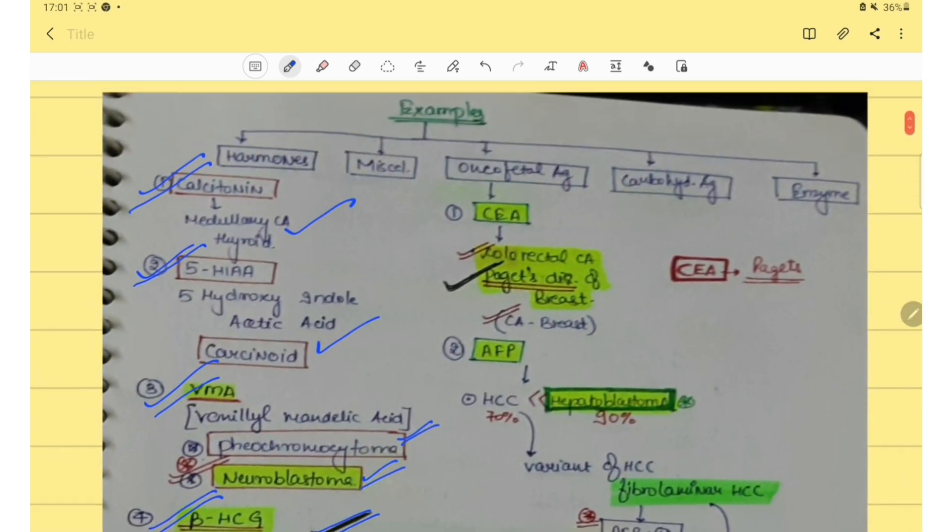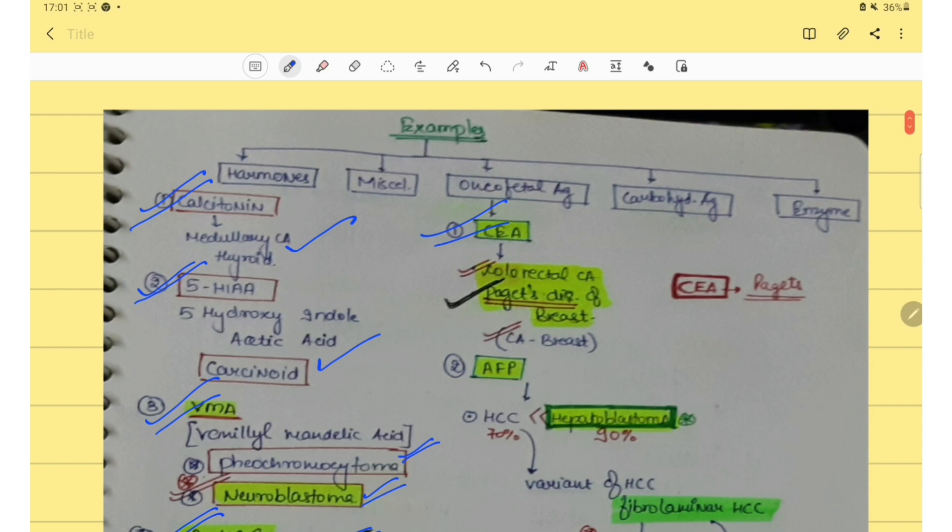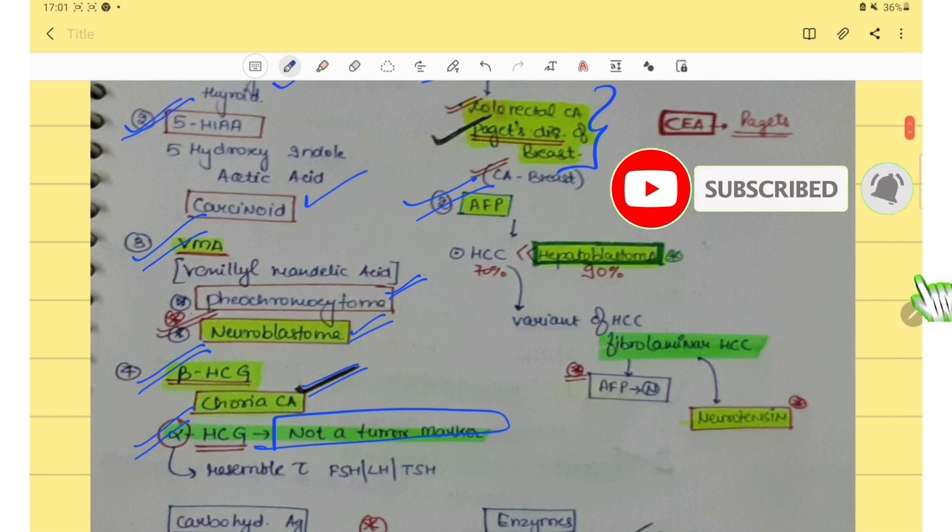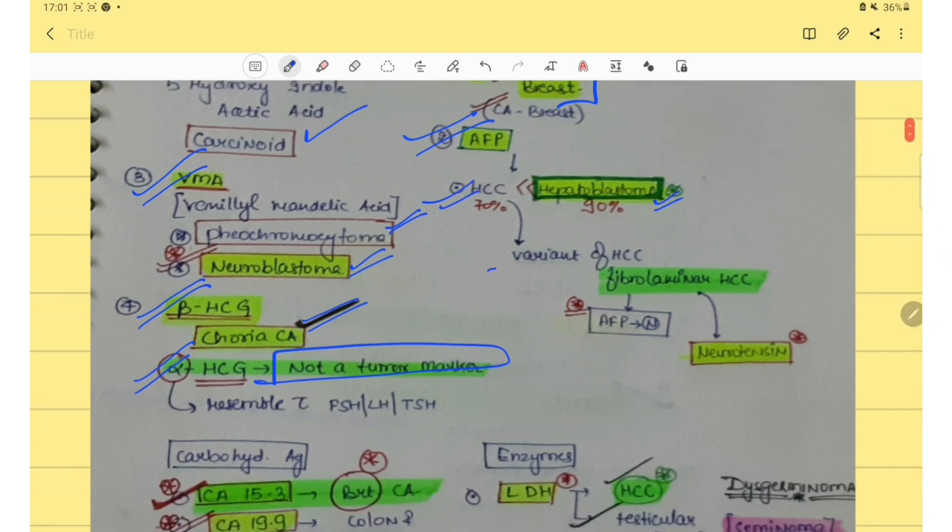Then second is CEA. It is raised in colorectal carcinoma and pancreatic disease of breast. And AFP is raised in hepatoblastoma and HCC. The variant of HCC that is fibrolamellar HCC, in this AFP is not raised.